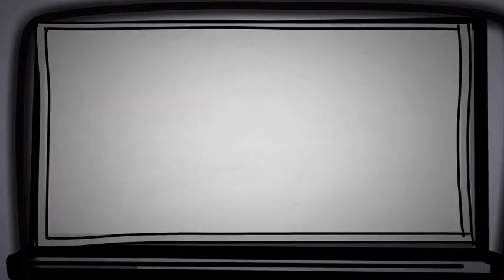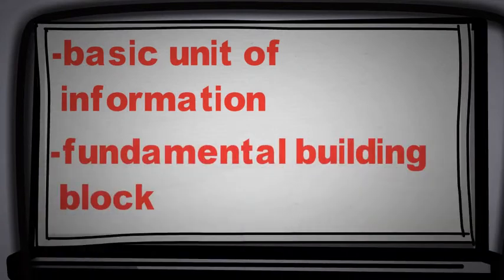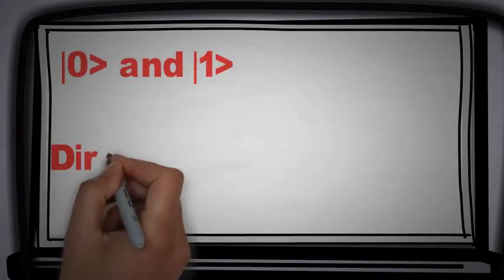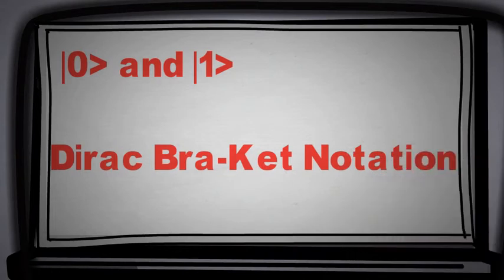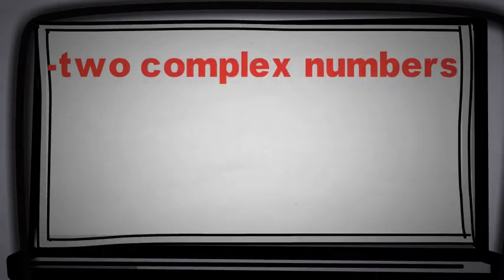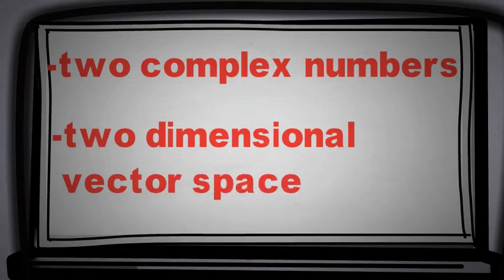Qubit represents the basic unit of information and is the fundamental building block of quantum computers. It consists of two levels, labeled 0 and 1, described by the Dirac-Bracket notation. In order to fully describe a qubit, we need two complex numbers. That is because a qubit is represented by a two-dimensional vector space over the complex number C to the power of 2.